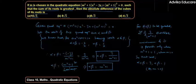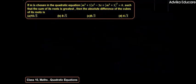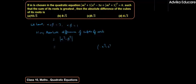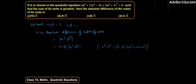Now we need to find the absolute difference of cubes of the roots, which is |α³ - β³|. Using the formula a³ - b³ = (a - b)(a² + ab + b²), we write |α³ - β³| = |α - β| · (α² + αβ + β²).